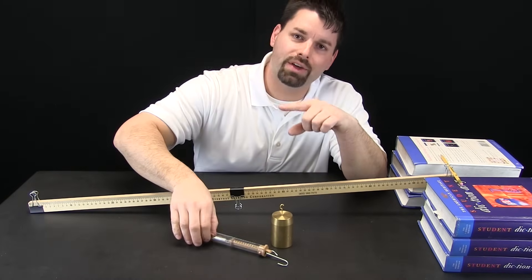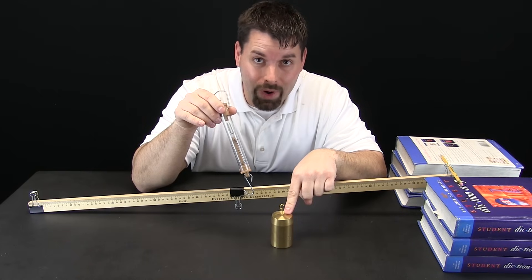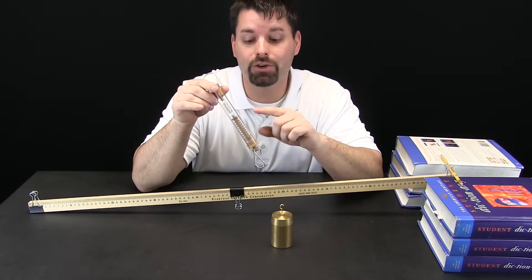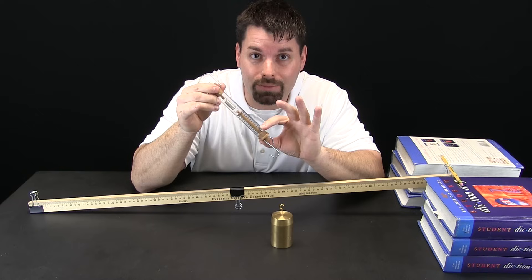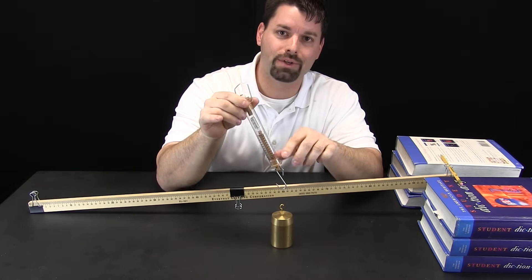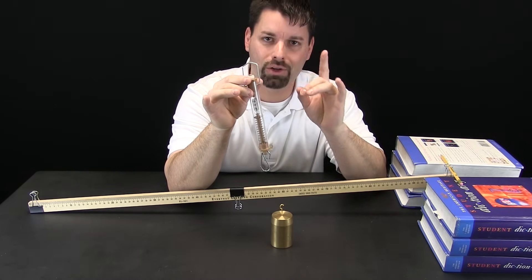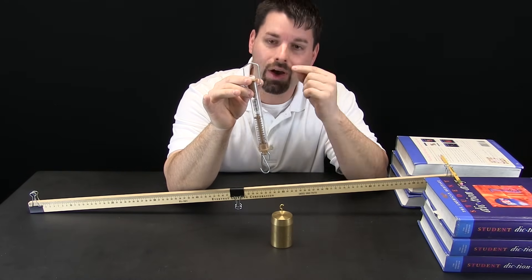To start let us take a closer look at our spring scale. So I have a thousand gram weight and the spring scale measures up to a thousand grams. What do you think is going to happen when I try to pick up this weight with the spring scale? We are going to zoom in and take a closer look and let us see what happens.